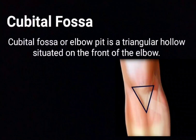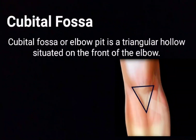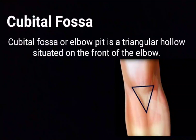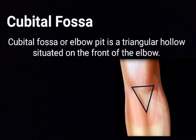Hello guys, hope you all are fine. Today the topic of discussion is the cubital fossa, also called the elbow pit. It is a triangular hollow situated on the front of the elbow, as shown in the diagram — the triangular fossa is on the anterior view of the elbow. Let's talk about its boundaries.